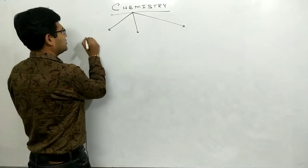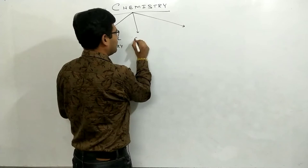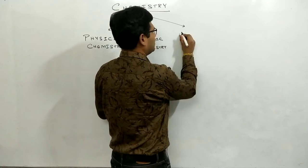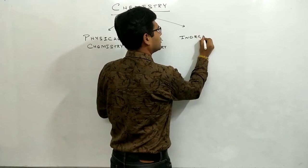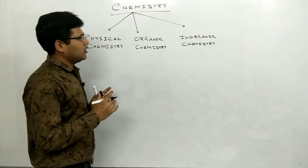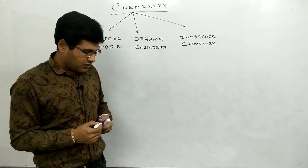First one is physical chemistry, second is organic chemistry, and third one is inorganic chemistry. तो three parts में हमारा divide up हो गया है: physical, organic, and inorganic. अब इन parts में हम क्या पढ़ते हैं, ये individually क्या बताती हैं — यह बड़े ध्यान से समझने वाली बात है.